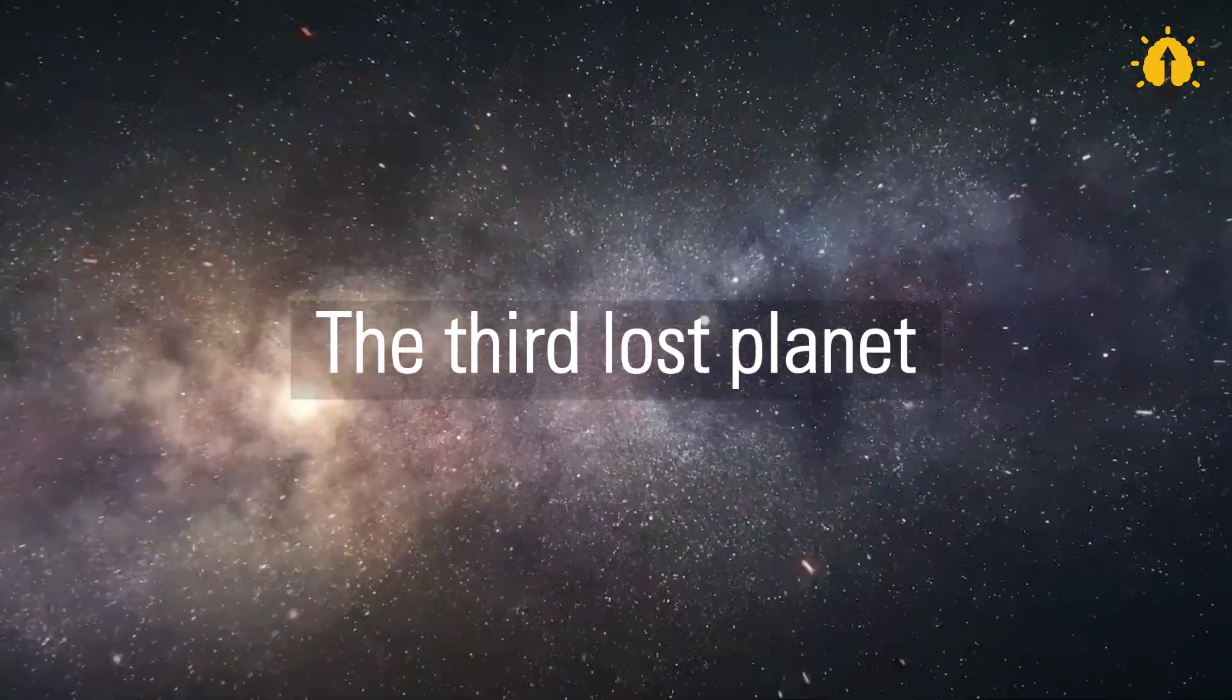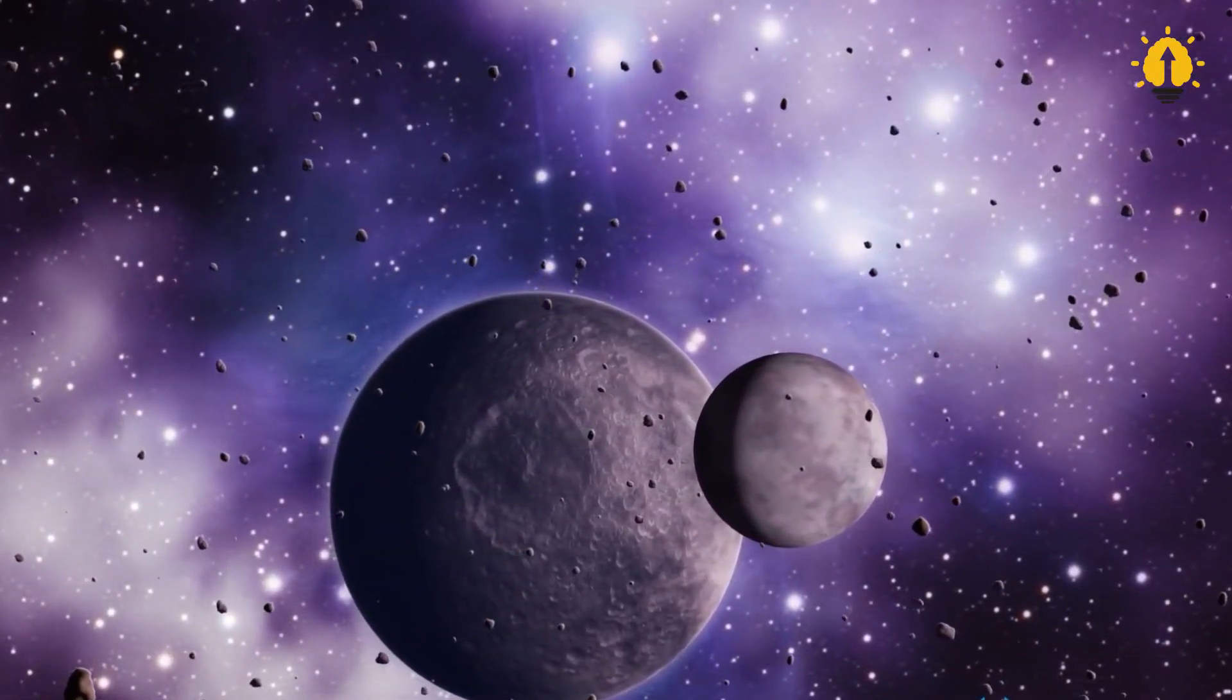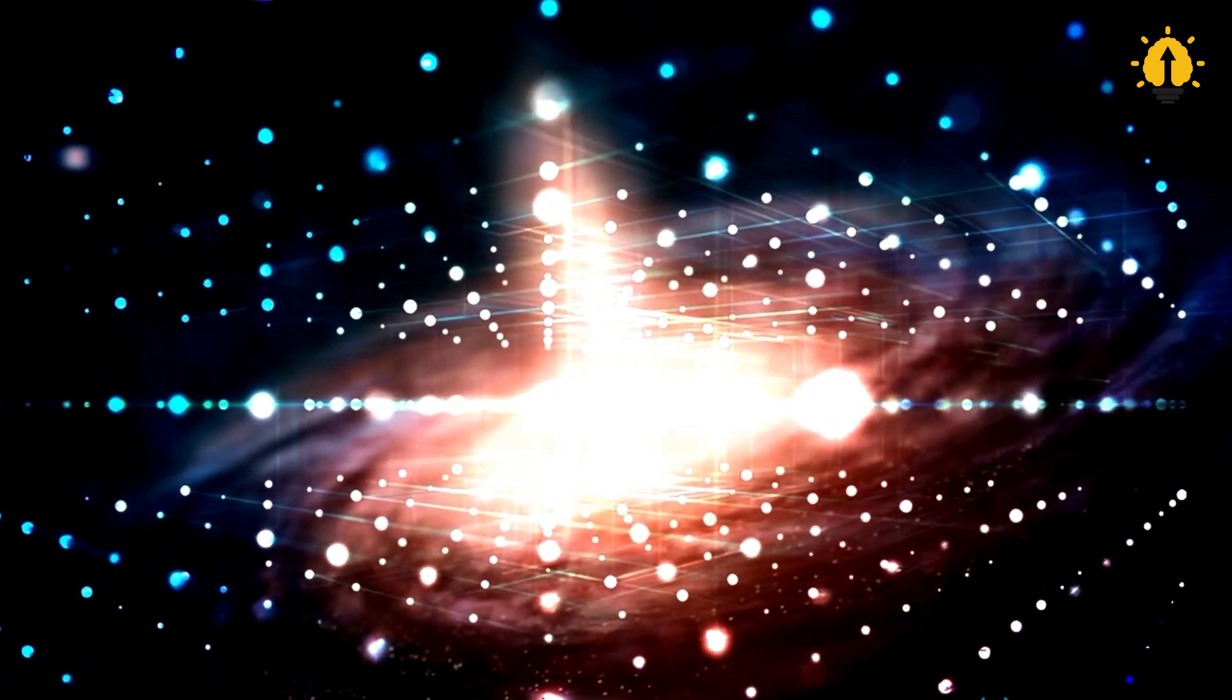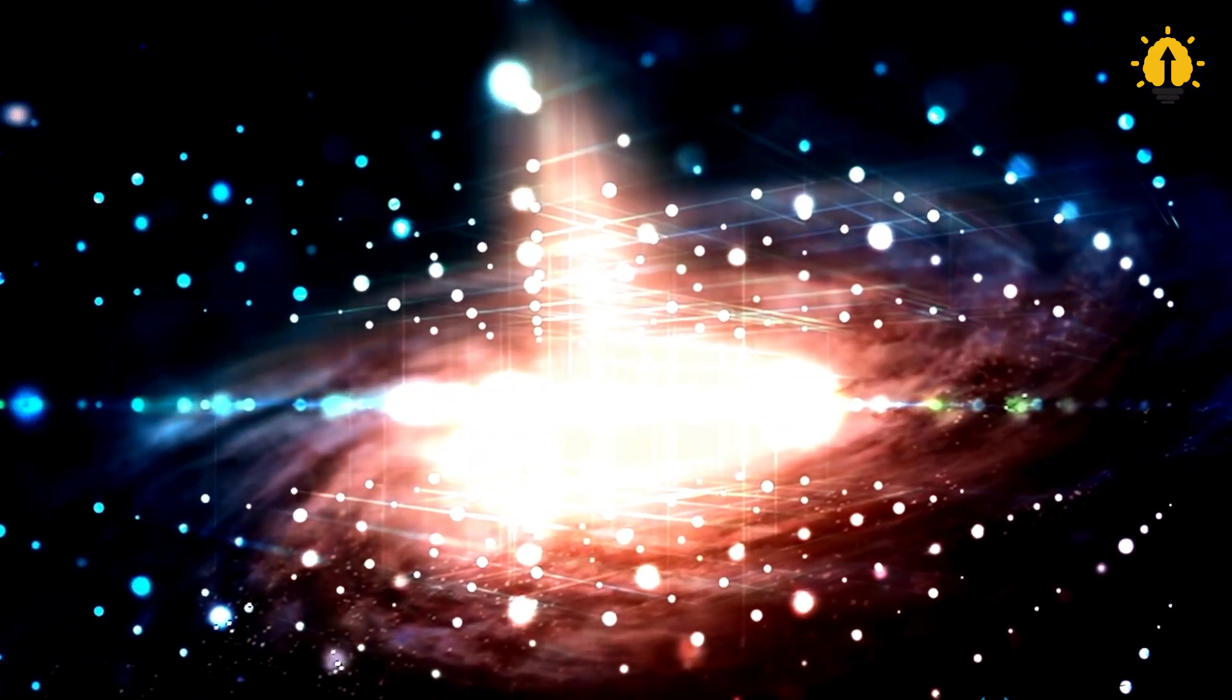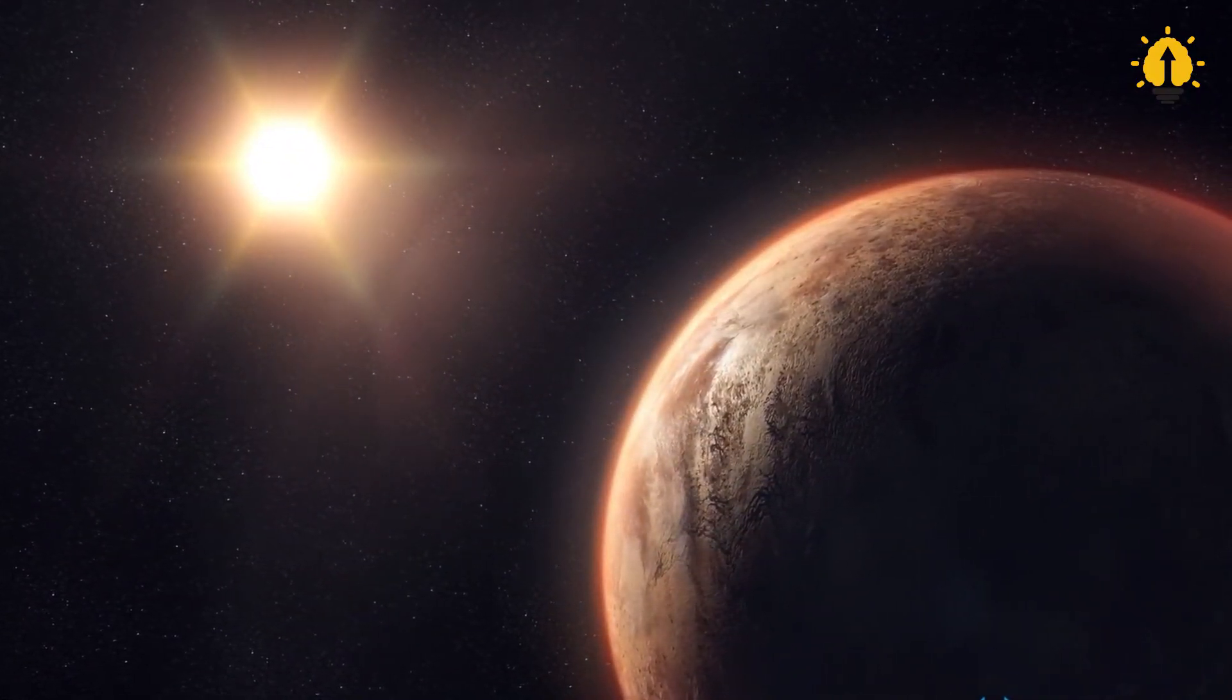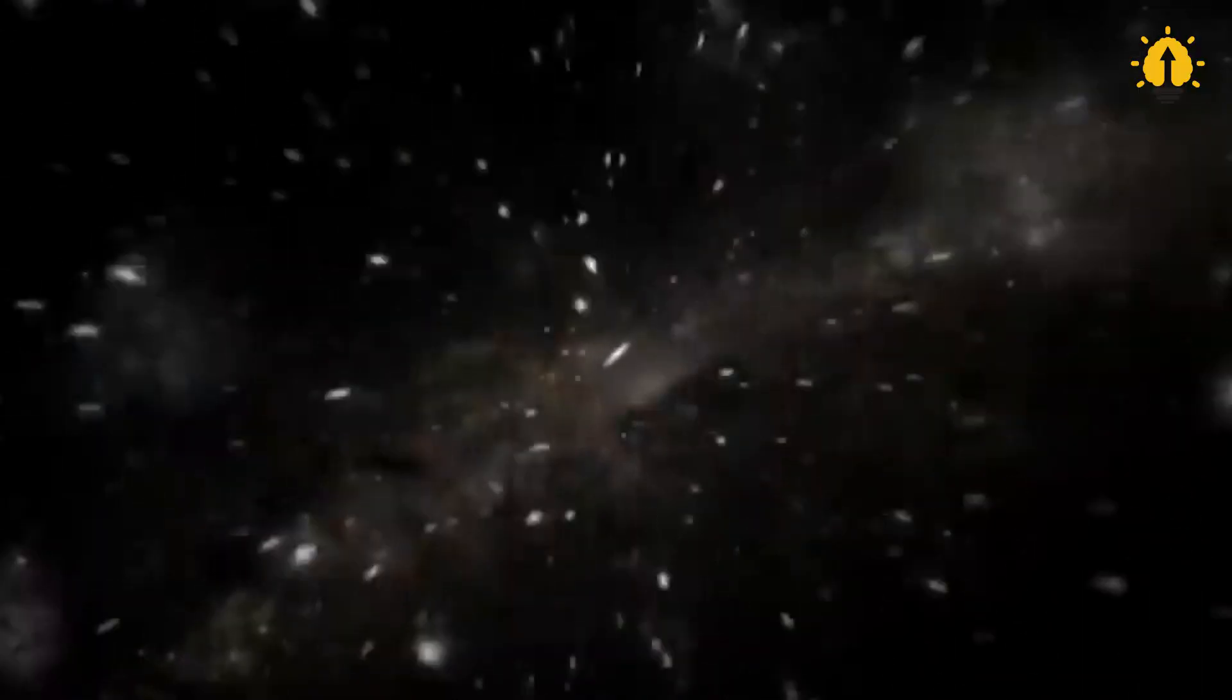The Third Lost Planet. While minor asteroids and dwarf planets in the asteroid belt and Kuiper Belt preserve traces of planets that once existed in those areas, some planets have vanished without a trace. But what if we told you that scientists have discovered evidence of a lost planet?